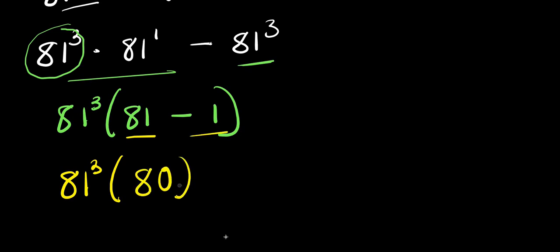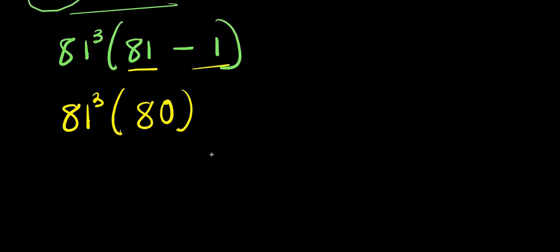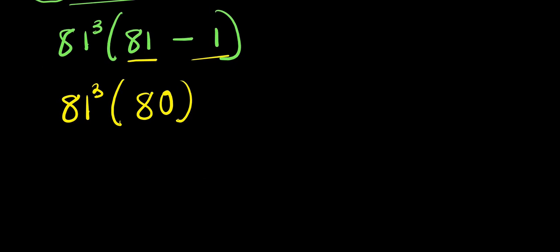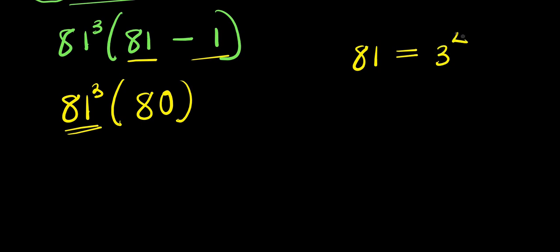So from here we are going to have eighty-one to the power three times eighty-one minus one, which is eighty. So we need to find the value of eighty-one to the power three. And don't forget the fact that eighty-one equals three to the power of four.